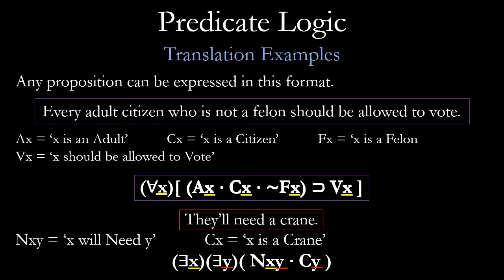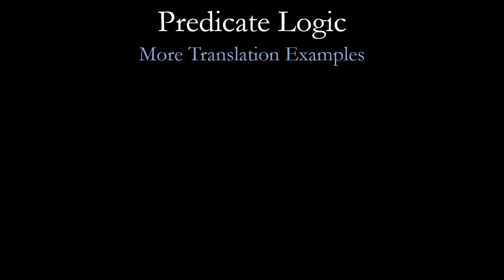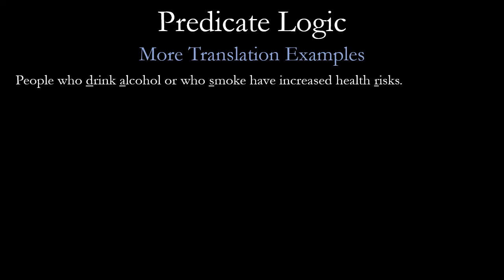It's worth noting that your brain already does this — it already tries to keep track of these constants and variables, these subjects and predicates. It's just that we usually don't express it in this symbolic form. Now we're doing that because we want to be very careful about our consistency. Let's go through some additional ways of using predicate logic and applying it to statements.